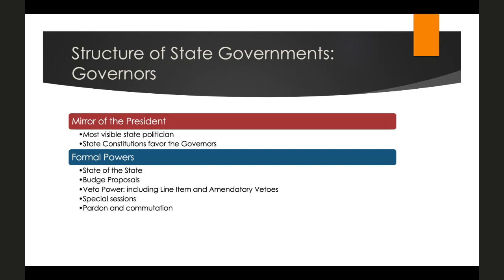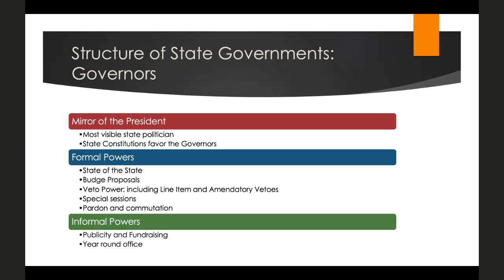Much like the president, governors can also call special sessions of the legislature and pardon or commute sentences for state crimes. Governors also have informal powers: as the most public state-level politician, they can motivate their agenda through publicity and are often asked to fundraise for their party and political allies for both local and national office. By virtue of having a year-round office, they can exert more authority in the public eye than the state legislature, affording them latitude to influence public opinion.